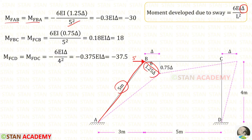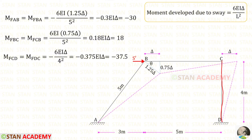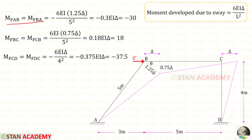So in the formula, instead of delta we apply 1.25 delta. In the horizontal member BC, we have to find two fixed end moments: M of BC and M of CB. Here the displacement is 0.75 delta, so instead of delta we apply 0.75 delta. The length of BC is 5. In the vertical member CD, we find two fixed end moments: M of CD and M of DC. Here the sway is delta and the height of CD is 4. Assuming EI delta equals 100, for M of AB and M of BA we get minus 30, for M of BC and M of CB we get plus 18, and for M of CD and M of DC we get minus 37.5.